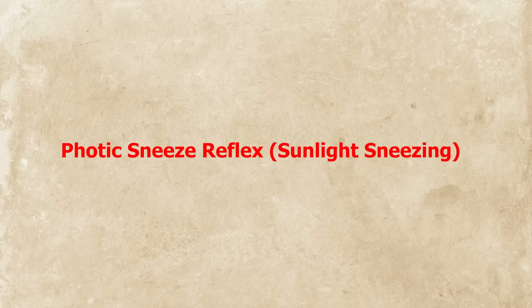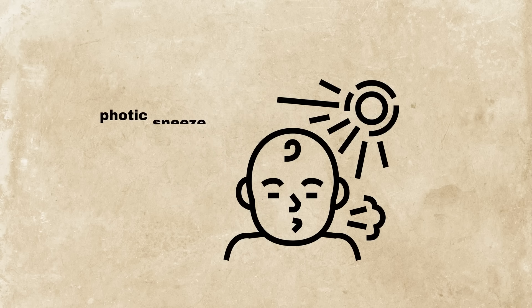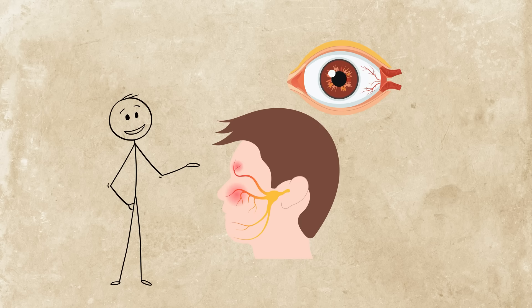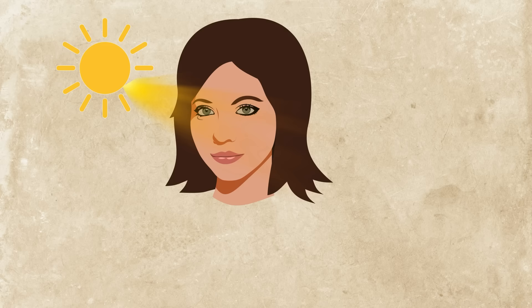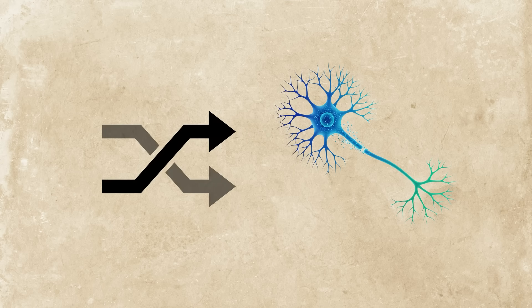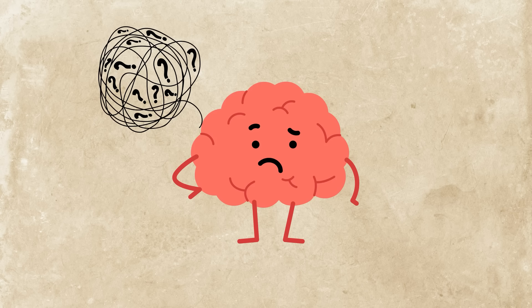Photic sneeze reflex, or sunlight sneezing. You walk into the sunlight and suddenly sneeze. You might have the photic sneeze reflex, something about 20 to 30% of people experience. It happens because the optic nerve and trigeminal nerve are close neighbors. When bright light stimulates your eyes, the sneeze command accidentally gets triggered. It's a neural crossover, one signal piggybacking on another and confusing your brain in the process.